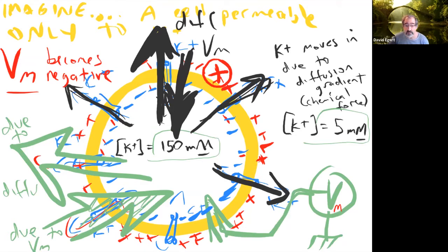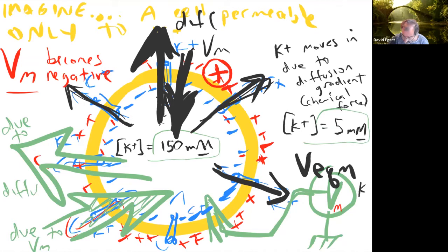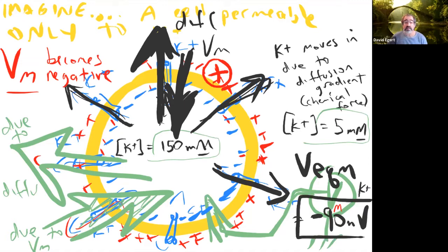That equilibrium happens specifically when the equilibrium potential for potassium — V_eq(K+) — is minus 90 millivolts. When enough potassium has left that the voltage becomes −90 mV, the electrical force pulling potassium back in exactly balances the chemical diffusion force driving it to leave the cell.